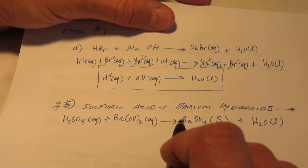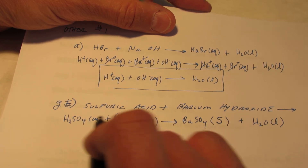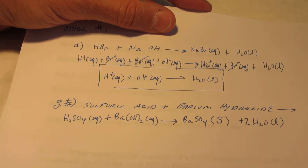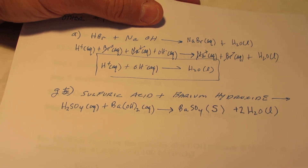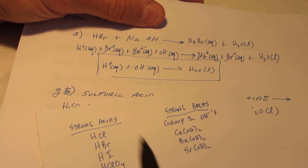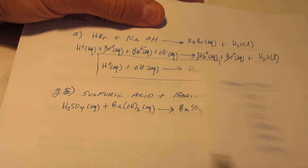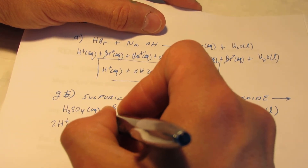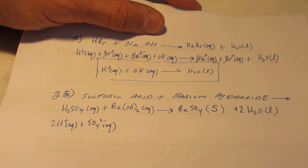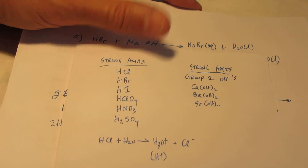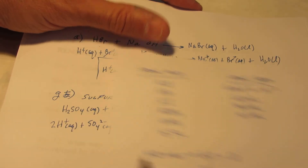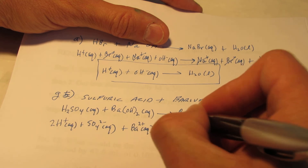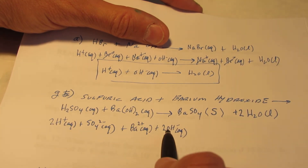We've got to balance this one. We have one barium on both sides and one sulfate on both sides, but I have a total of two plus two — four hydrogens — so I need to put a two in front of water. Now ionically, H₂SO₄ is a strong acid, so we dissociate it. We're going to split it up into two H⁺ and a sulfate, just like we did in your notes. And barium hydroxide — it's on our list of strong bases — so we will dissociate that into its ions: Ba²⁺ and two OH⁻. What do I do with barium sulfate? It's a solid, does not dissolve in water, so we keep it stuck together.